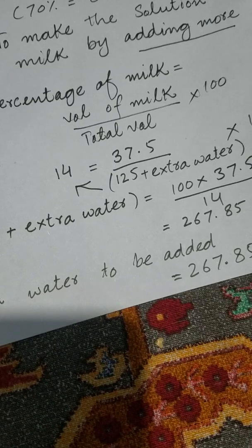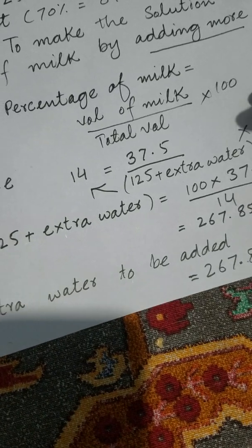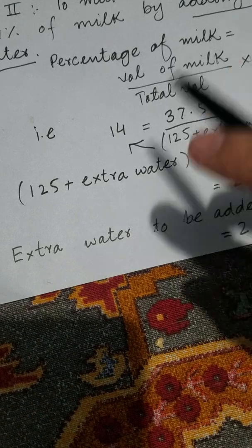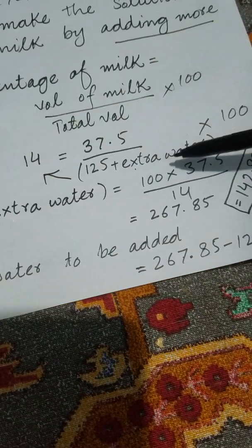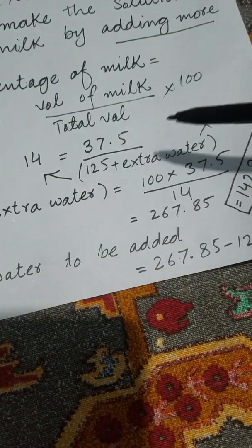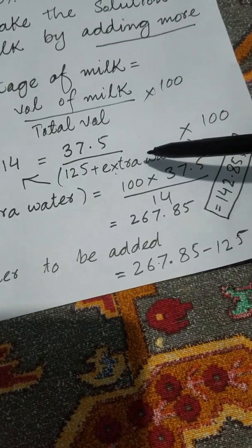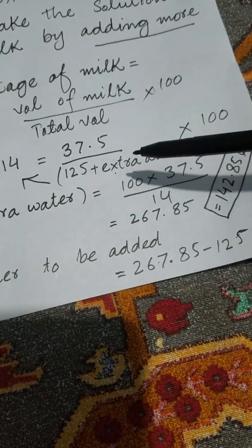Then we add extra water for it. Okay, so 14 equals 37.5 divided by 125 plus extra water, multiplied by 100. We put 125 on this side, this denominator, and this 14 will come down, just to find this amount.